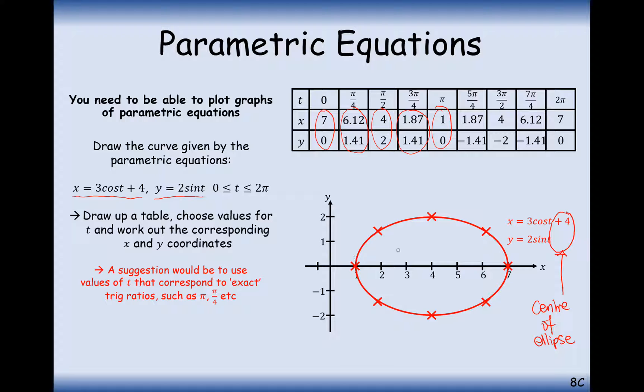As well as the radius, the radius is effectively going to have a different x radius to the y radius. The x radius is 3, because there's a number 3 multiplying the cos in the x equation.